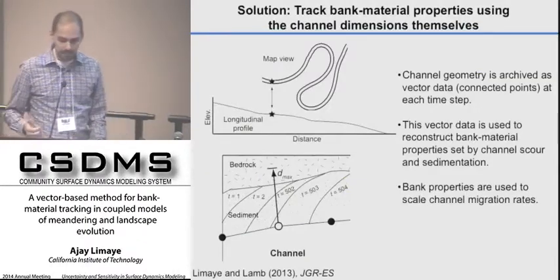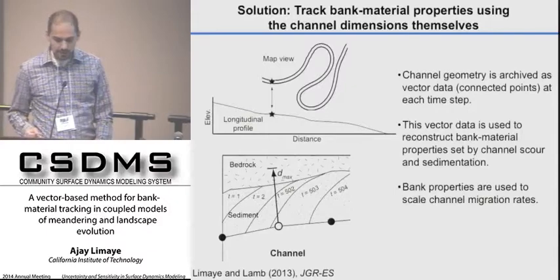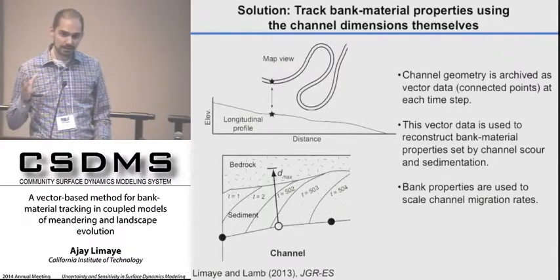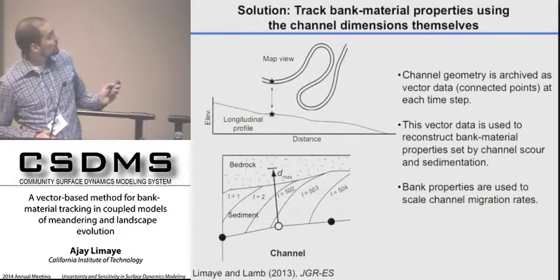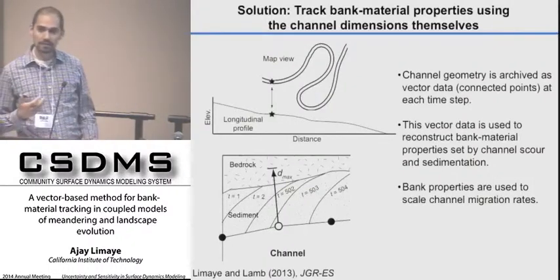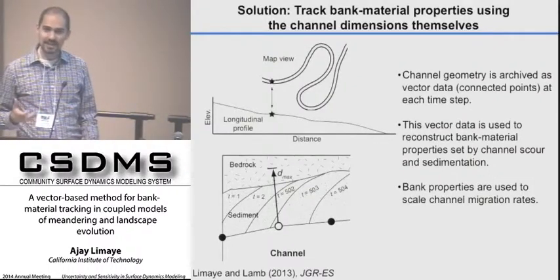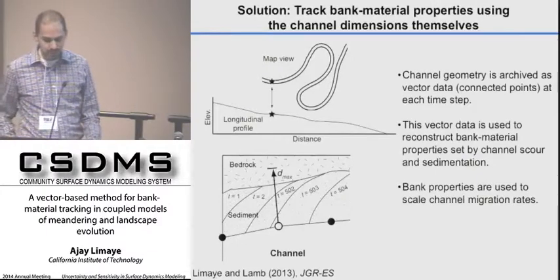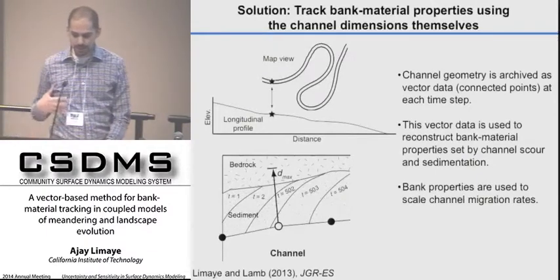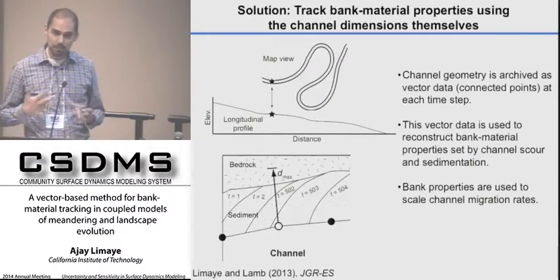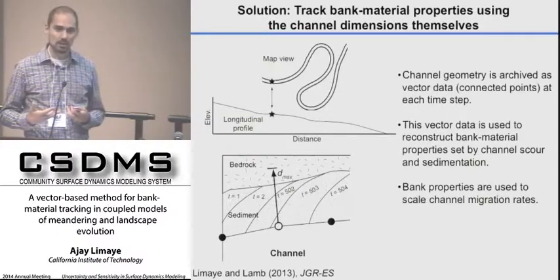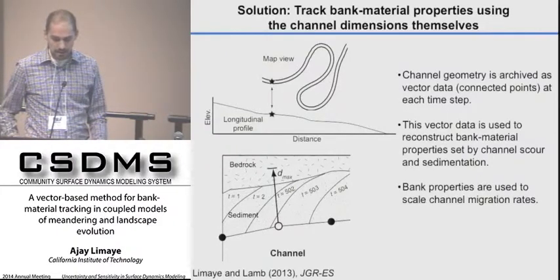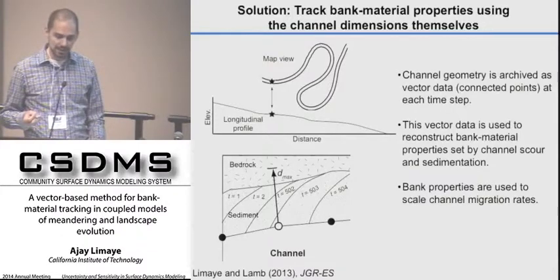The channel geometry is archived as vector data — sets of collected nodes at each time step. That vector data includes the longitudinal profile of the channel, its map view extent, and its cross-section. This vector data is then used to reconstruct arbitrary bank material properties, such as grain size or elevation, that are set by channel scour and sedimentation. This history of bank properties is then used to scale channel migration rates.